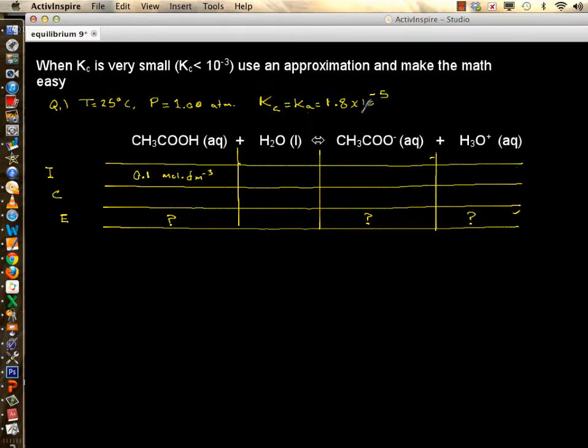So K is much smaller than 1, and you have more reactants and less products at equilibrium. Initially, they tell us you have 0.1 mole per decimeter cubed of the acid, and the question is how much of each species do you have at equilibrium?